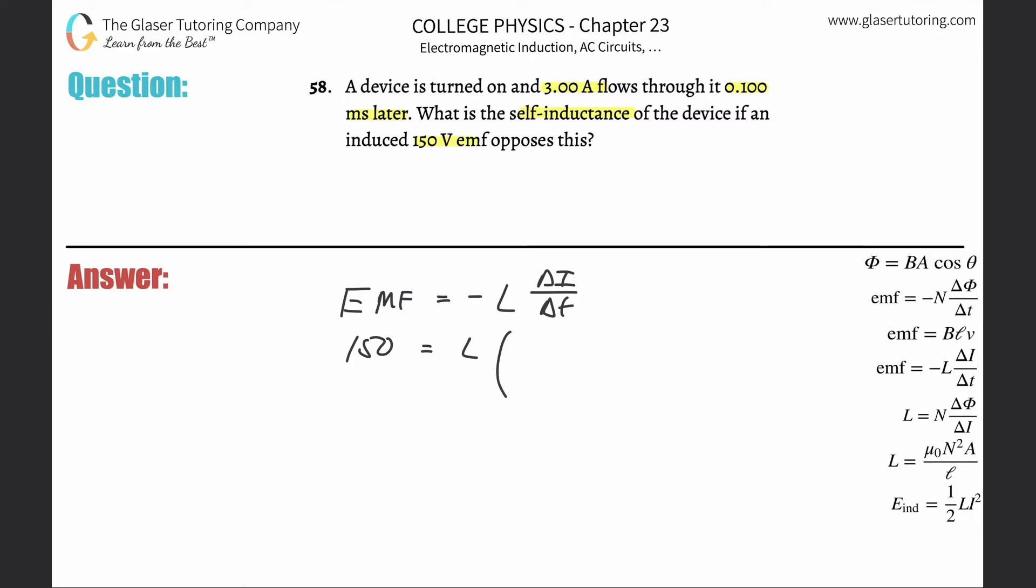Then we have our change in current divided by the change in time. If a device is turned on, the current initially is 0, then 3 amps flows, so obviously the change is 3, divided by the change in time. They told us 0.1 milliseconds, but we need that in seconds.